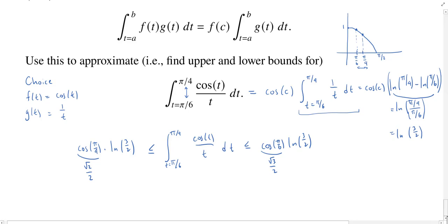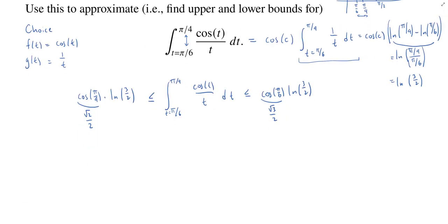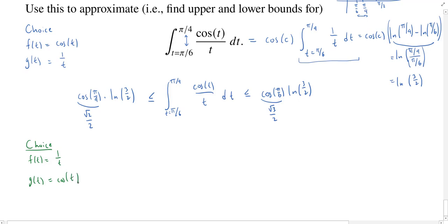Now, what if we had made the other choice? Let's make Choice 2: if we had chosen f(t) = 1/t and g(t) = cosine of t. Now when we rewrite the integral of cosine(t)/t dt using the generalized mean value theorem, instead of cosine of c, we get 1/c — of course it's a completely different c — times the integral from π/6 to π/4 of cosine of t dt.